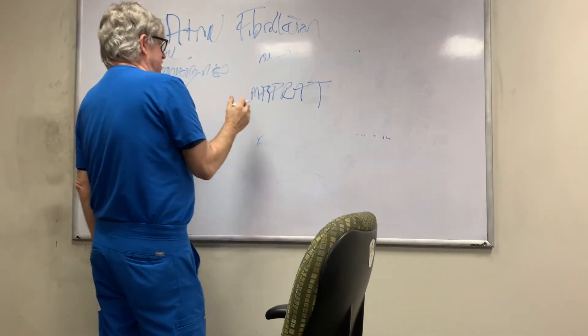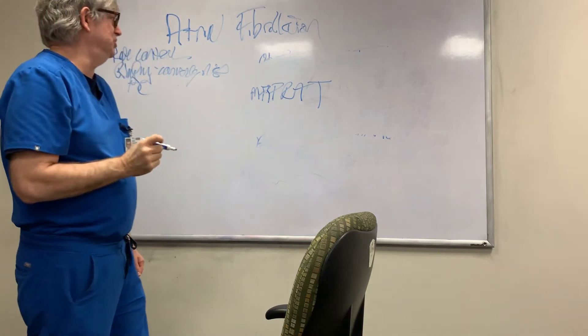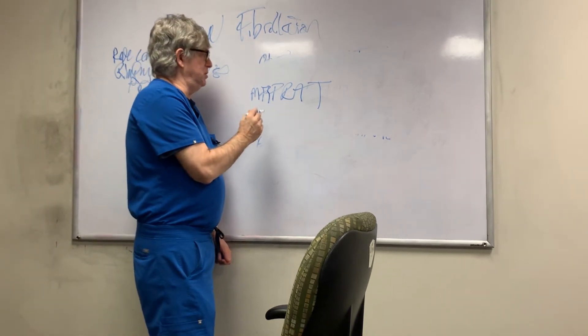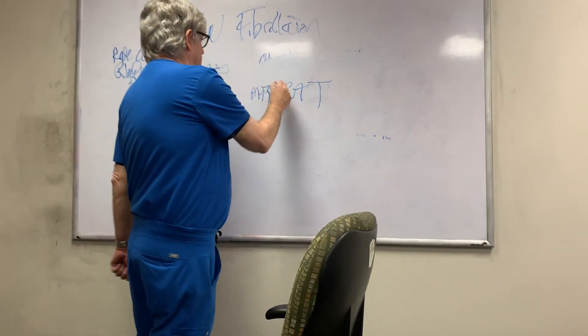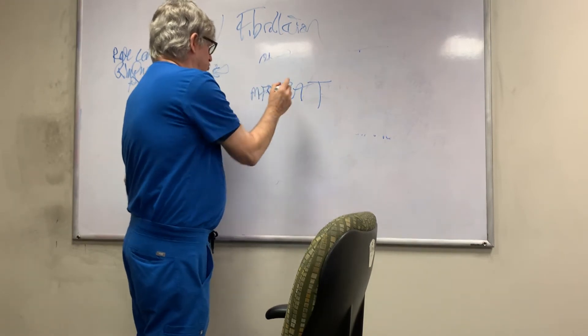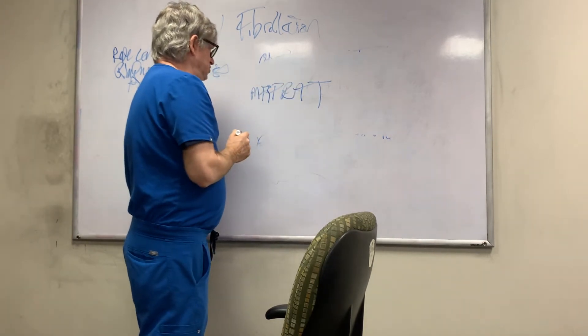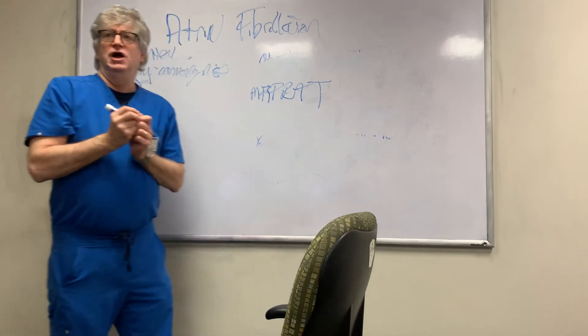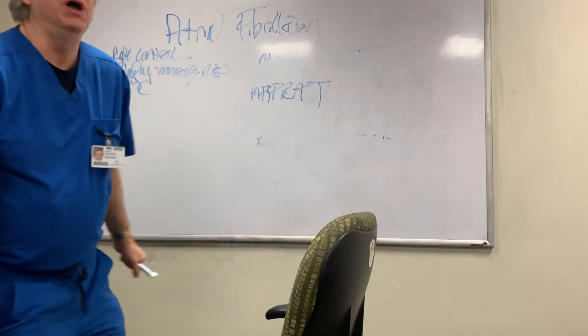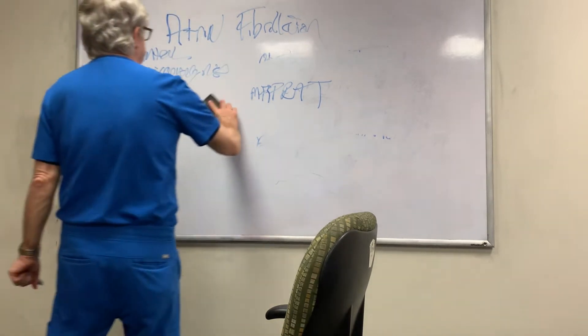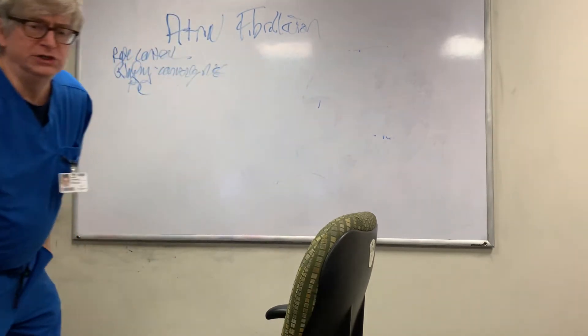MI or myocarditis, aminophylline toxicity, pericarditis, pulmonary embolism, rheumatic, A was thyrotoxicosis, and the other A was alcohol. It's just something to think about if you get pimped and somebody wants you to go through the causes.